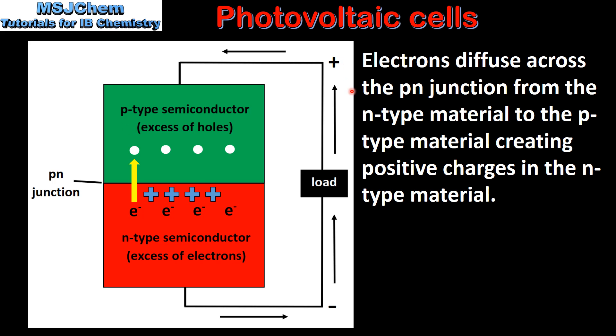Electrons diffuse across the p-n junction from the n-type material to the p-type material, creating positive charges in the n-type material. Here we can see an electron diffusing across the junction, forming a positive charge in the n-type semiconductor.